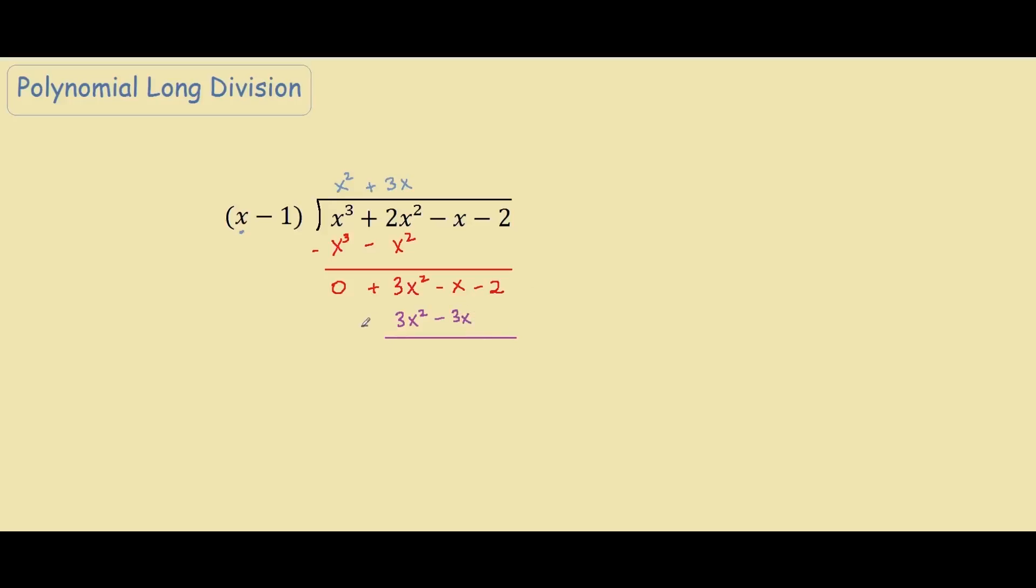So again, subtracting, we get 3x squared minus 3x squared is 0. And negative x plus 3x is 2x. And negative 2 minus 0 is just negative 2. And hopefully you guys see some pattern here of what we are actually doing.